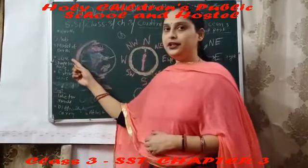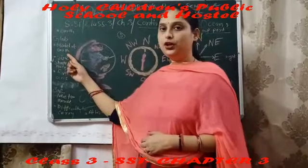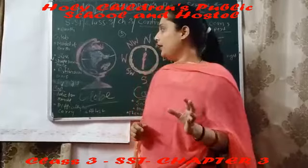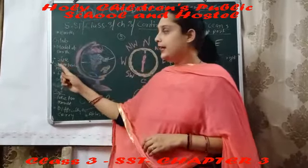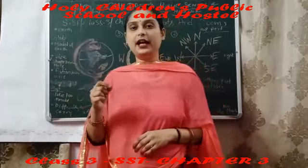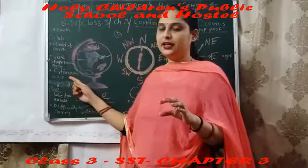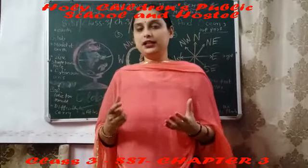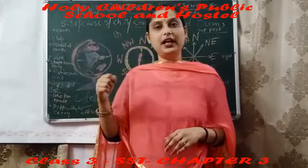Now we will talk about globe. The first point is that globe is the model of earth. Globe is the small model of earth which shows the exact size, location, and place of the continents and oceans. It rotates on its own axis. But globe is too small to show all places, and it creates difficulty to carry.